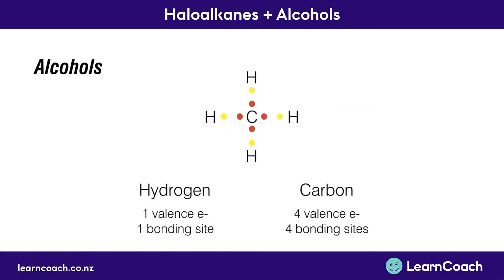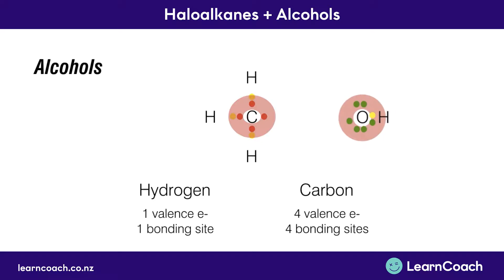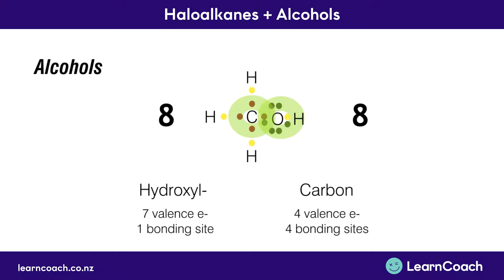Now we'll look at alcohols. Starting from a simple hydrocarbon, we can replace one of the hydrogens with a hydroxyl group, which is an OH. The oxygen has six valence electrons, plus one from the hydrogen, so the hydroxyl group has seven valence electrons in total. That gives it one bonding site, and just like the halogen, it replaces a hydrogen bonded to carbon so that both the carbon and the hydroxyl have eight electrons and are stable.